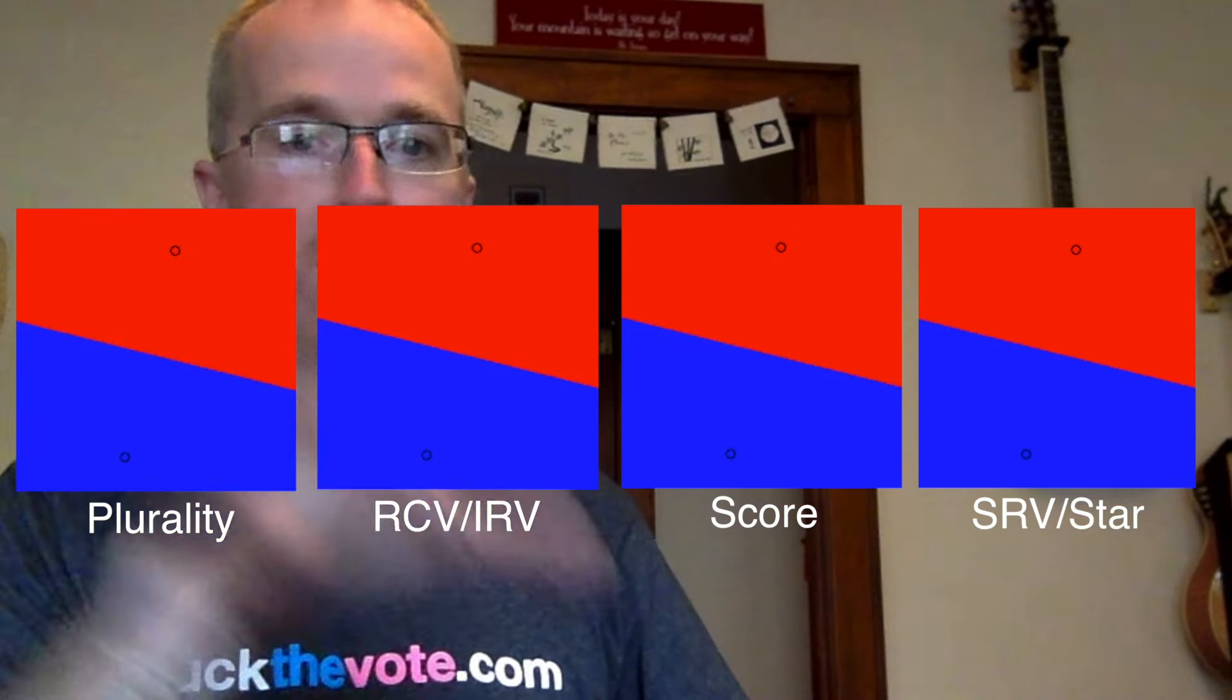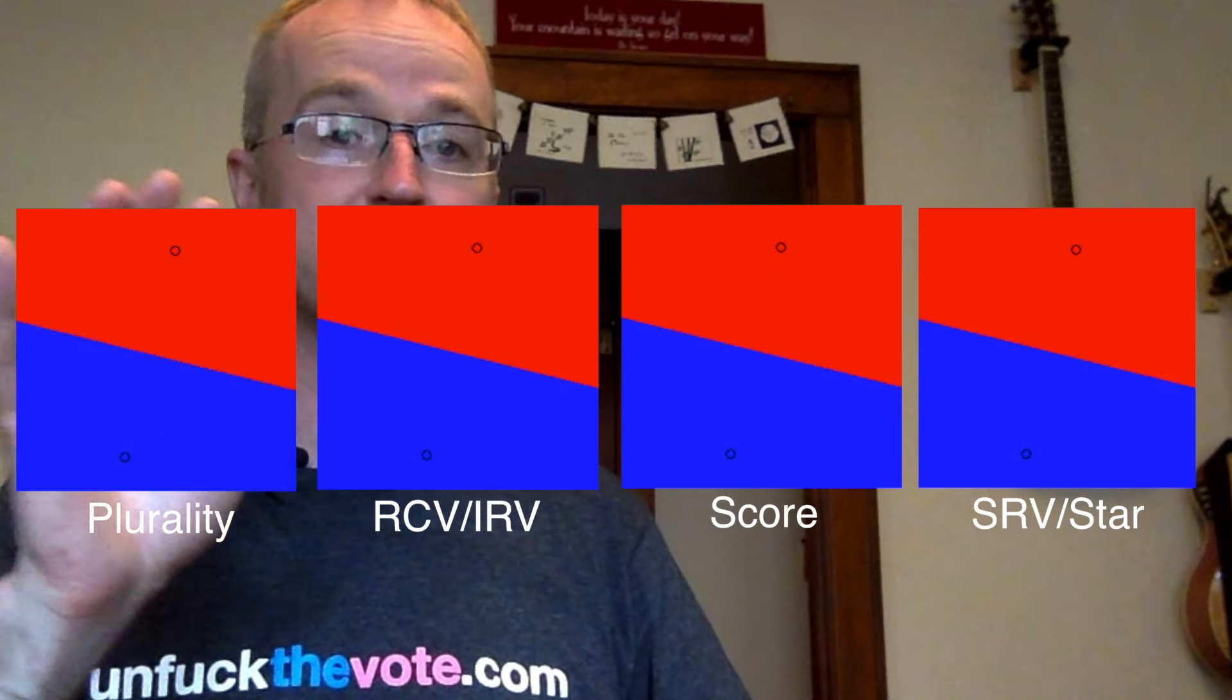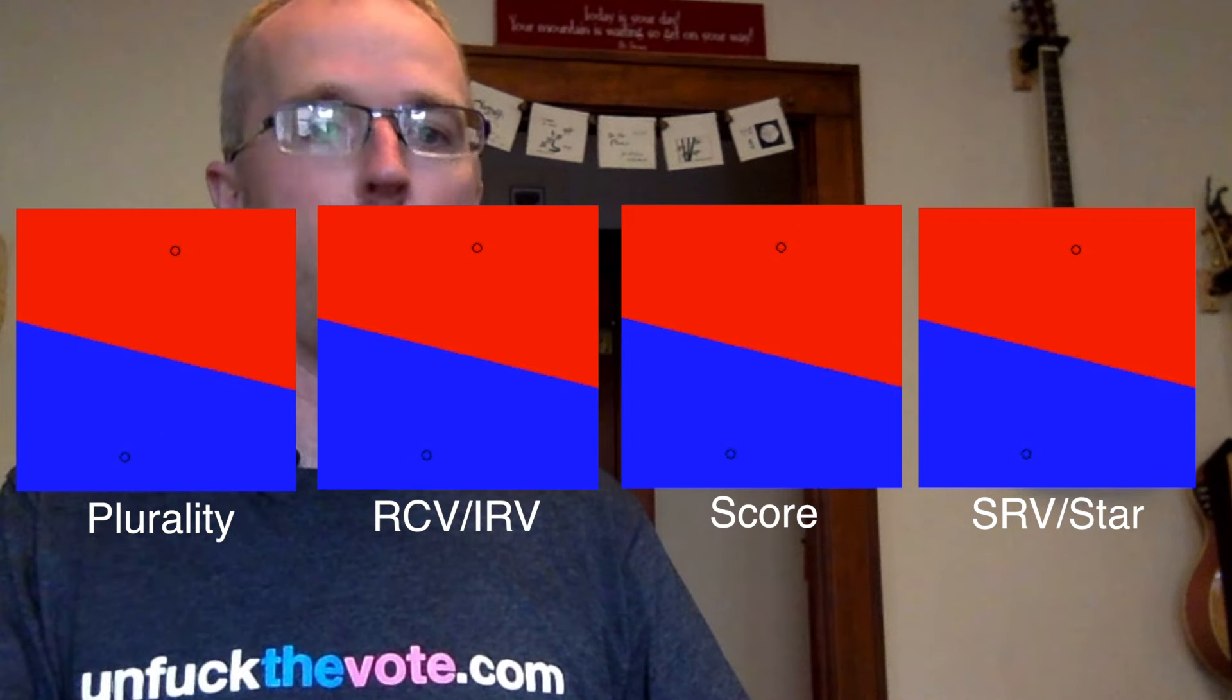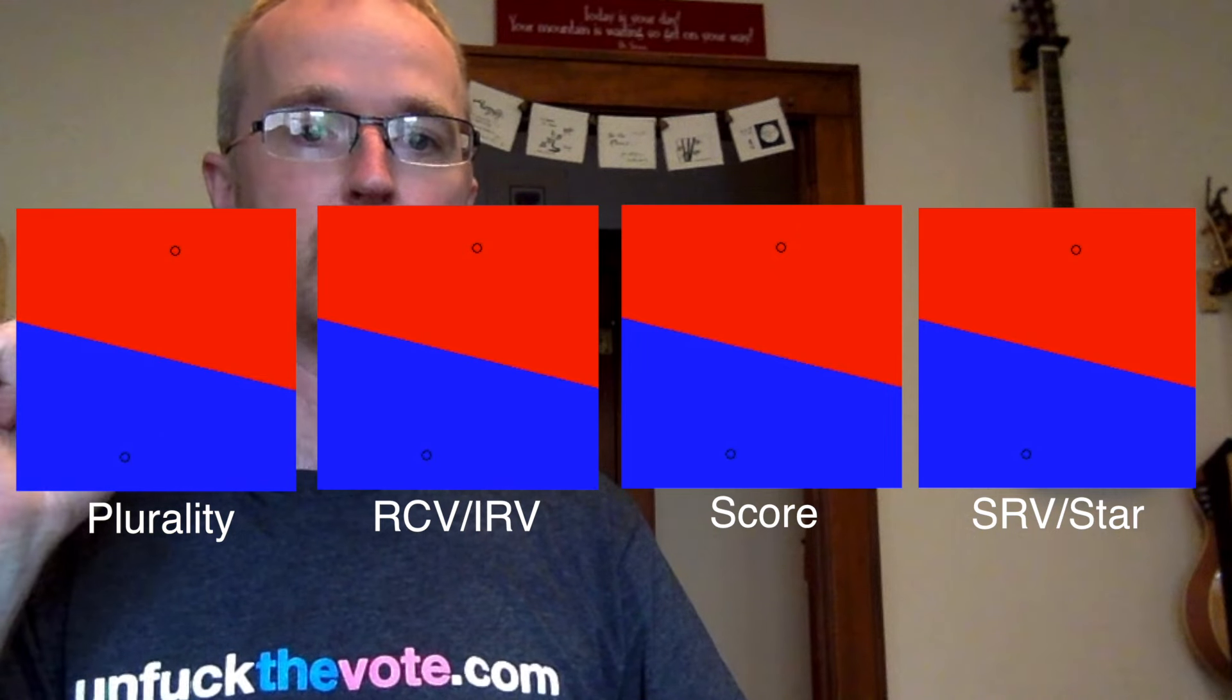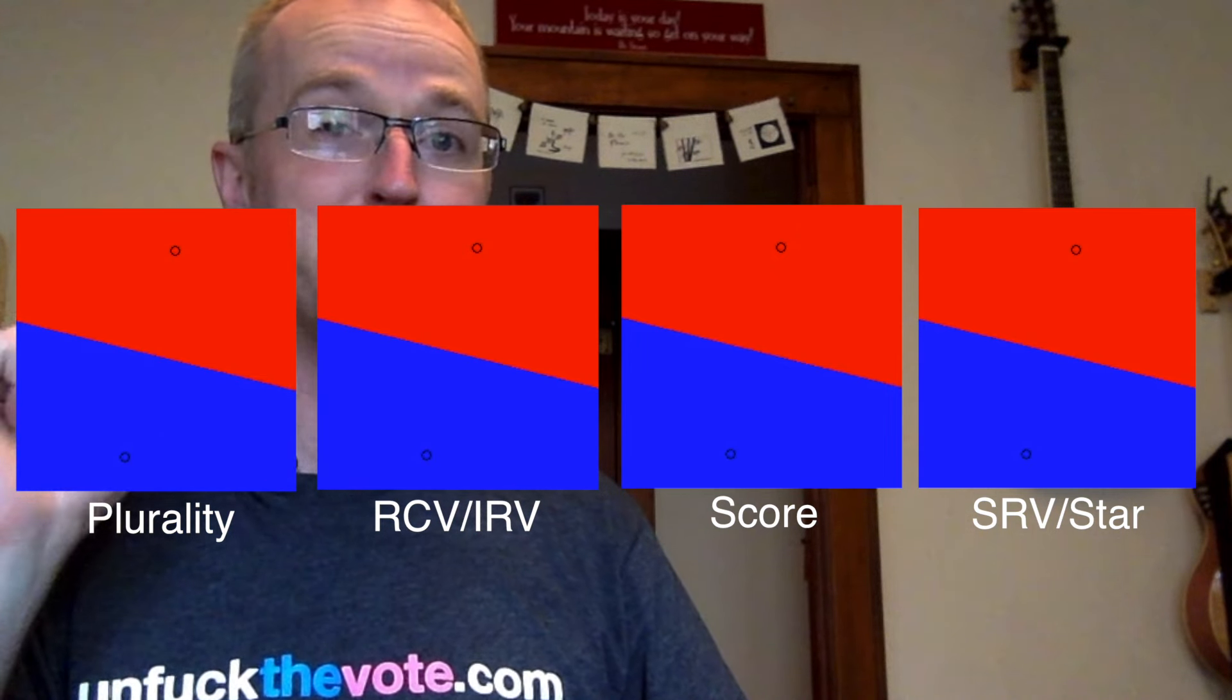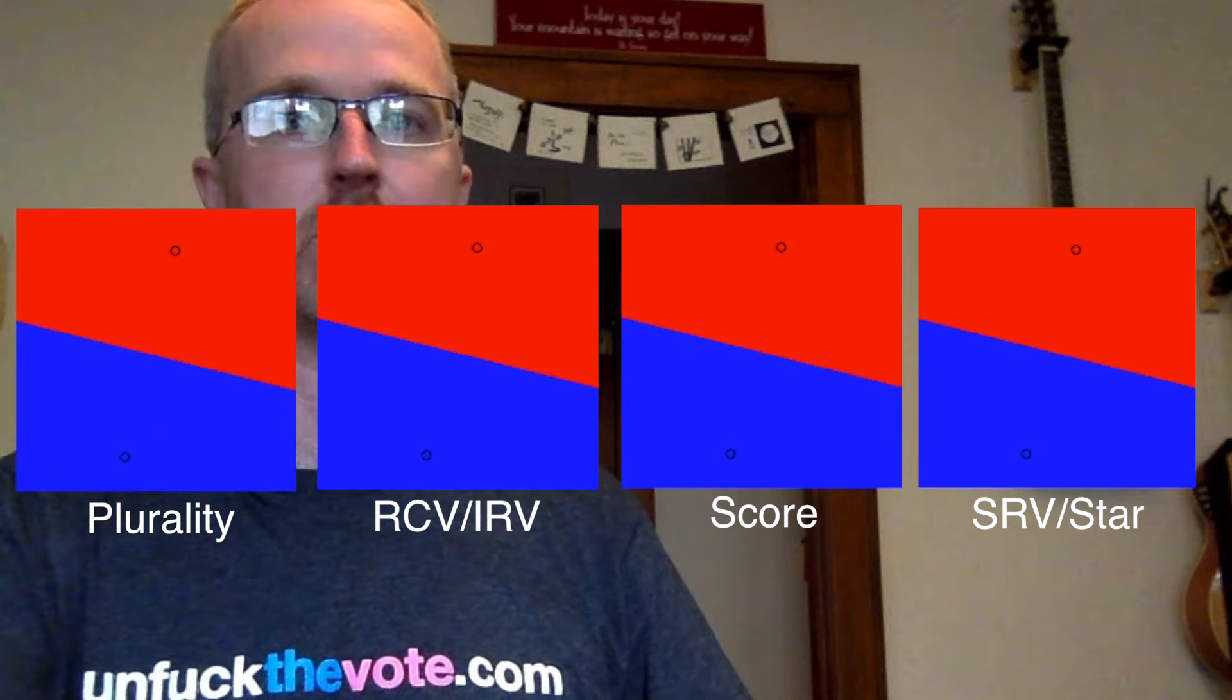So as you can see with two candidates, all of the voting methods behave the same and produce results that make sense. In all the systems, the candidate closest to the center of public opinion wins, which matches what would happen if there's just a single voter right at the center of public opinion.